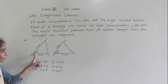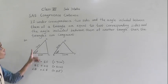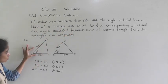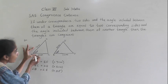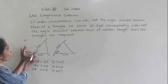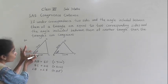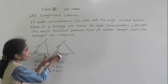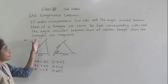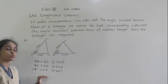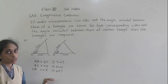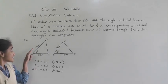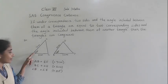So two sides and included angle. What is the congruence criterion? If under correspondence two sides and the angle included between them of a triangle are equal to the two corresponding sides and the angle included between them of another triangle, then the triangles are congruent. So these two triangles are congruent by side-angle-side criterion.